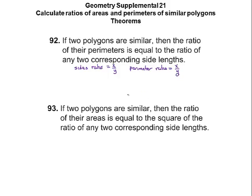If they're similar and the side ratio is X over Y, their area ratio is X over Y squared. That makes sense too — with perimeter we're just adding up all the sides, but with area we're getting square units. So if the ratio of the sides is some value, when we find the areas, it gets squared. To remember: square the ratio, because area is square units. Everything's squared.